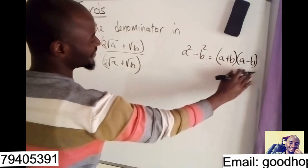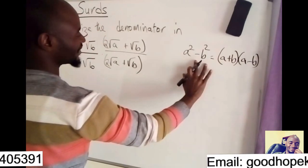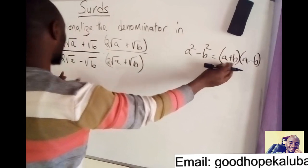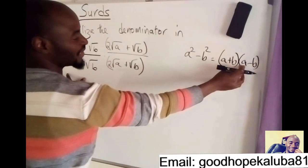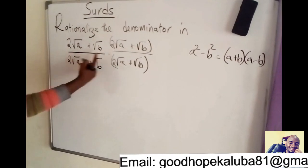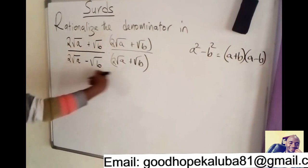So if you multiply something like this, you end up with this. So this is where we get the conjugate. So if A plus B is what we have here, its conjugate will be A minus B and vice versa.